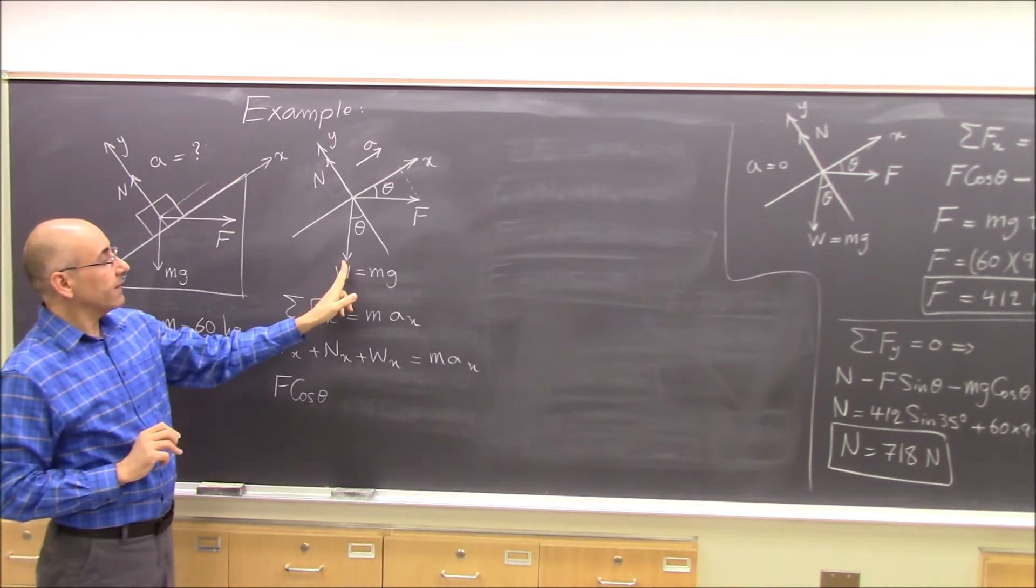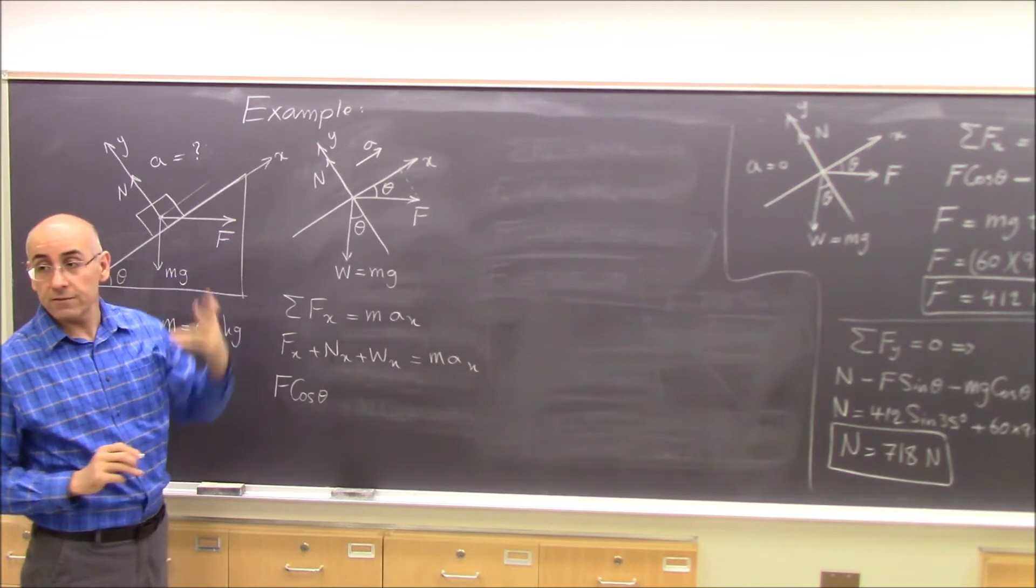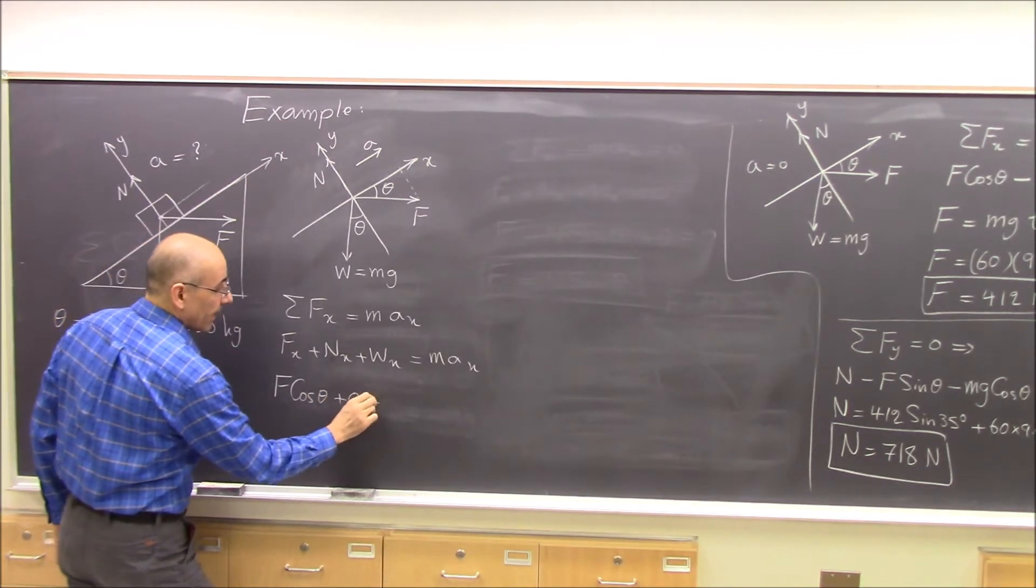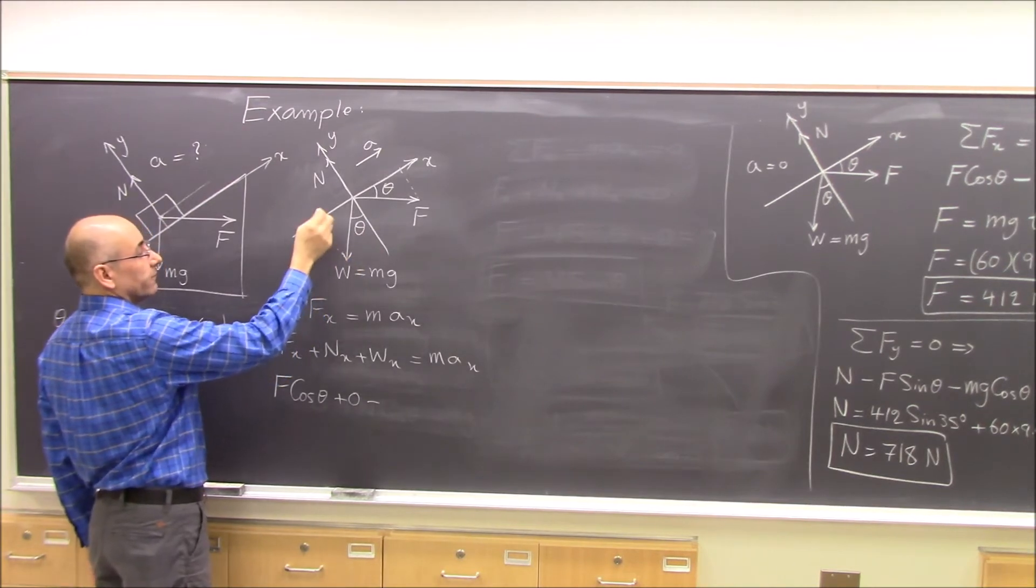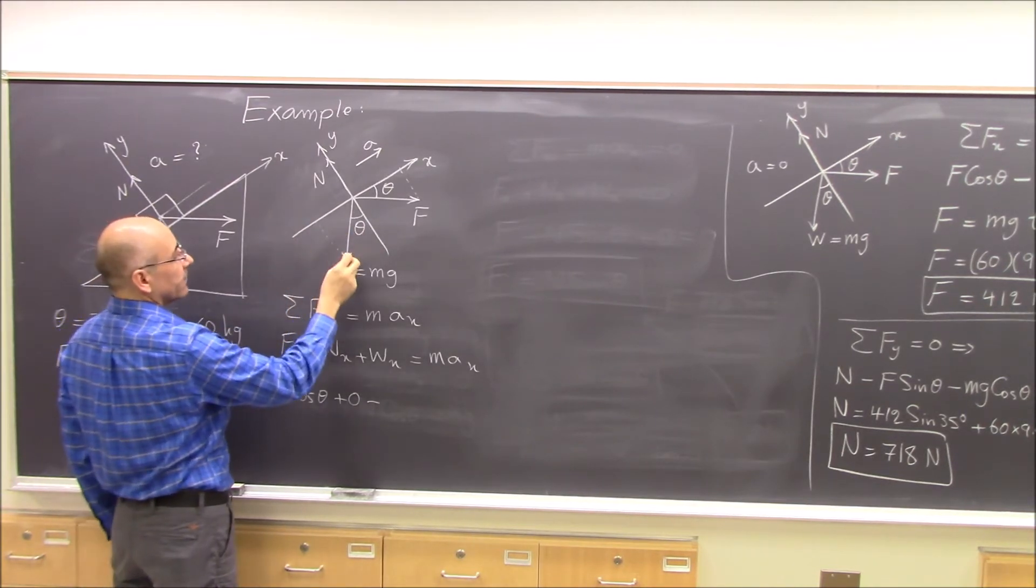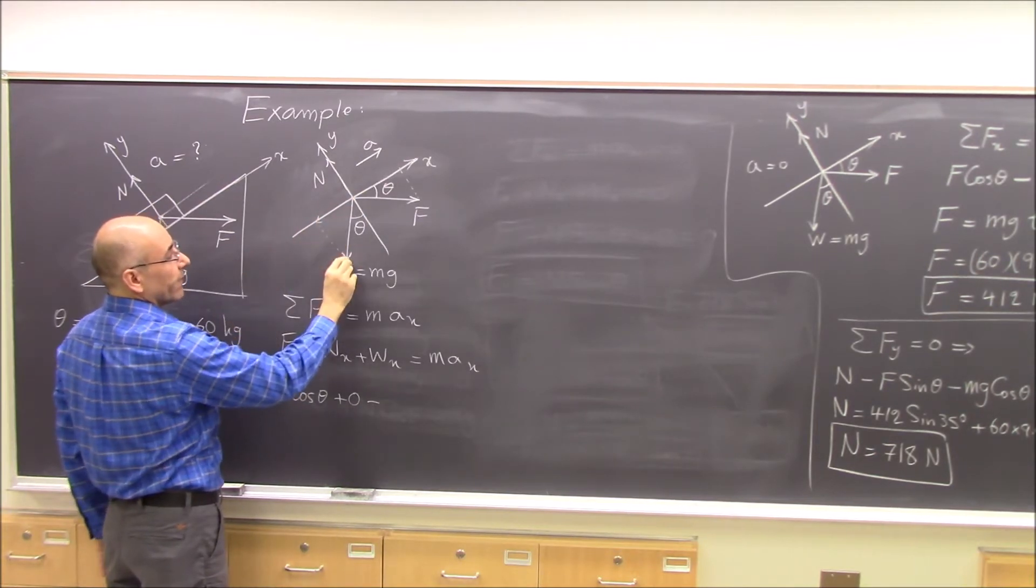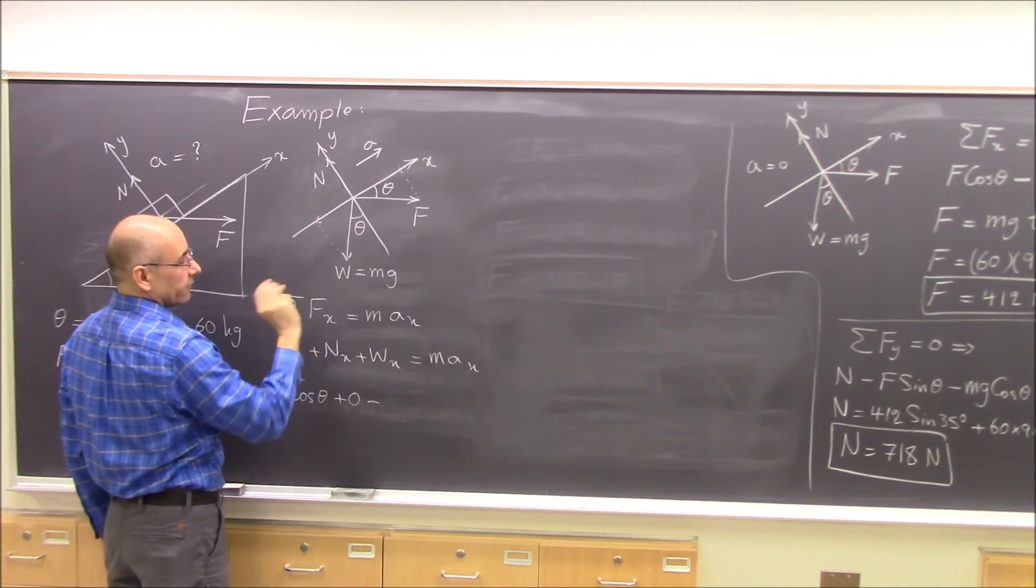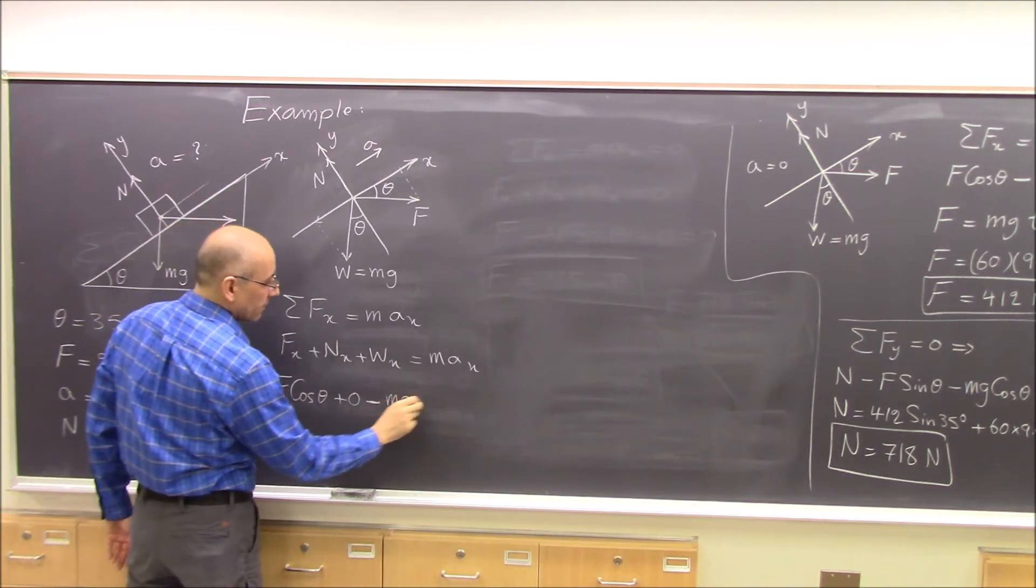But the x component of N is what? Zero, because it is in the y-direction. And W, the x component of W is when you project W onto the x-axis. The x component is negative, but is adjacent to theta, so you use sine. So negative mg sine theta.